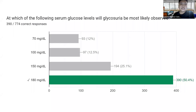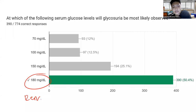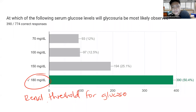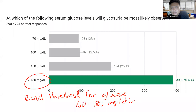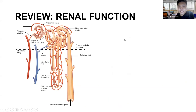Next: At which serum glucose level is glycosuria most likely observed? The answer is 180 mg/dL — because that is the renal threshold for glucose (160 to 180 mg/dL). The renal threshold means that when glucose concentration exceeds this level, not all glucose can be reabsorbed, and some glucose is now excreted in the urine. To understand this, we need to review renal function: filtration by the glomerulus, reabsorption (substance goes from filtrate back to blood), and secretion (substance goes from blood to filtrate).